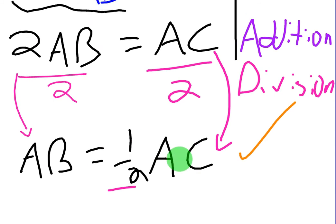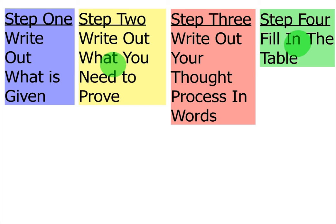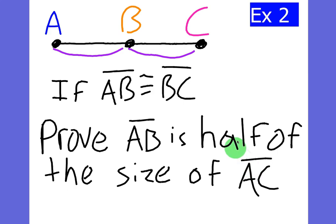So the question is, how do you get from the top to the bottom? Okay, well, that's what we're going to work on. Step three, write out your thought process in words. So like we talked about, it's pretty obvious that if AB equals BC, then certainly this is half of that.